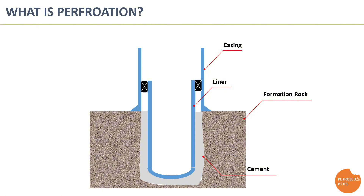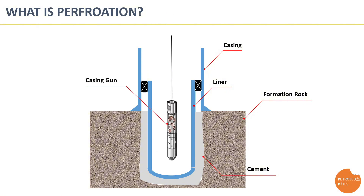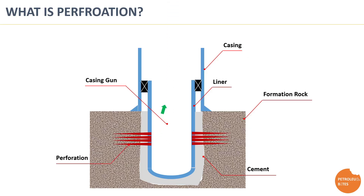This is where perforation plays its role — holes are blasted through the steel casing, cement, and formation rock, creating conductive tunnels that allow movement of formation fluid from the reservoir to the wellbore to start the production process.